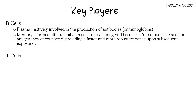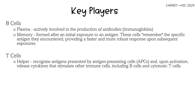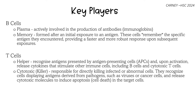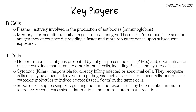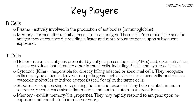There are four key T cell players. Helper T cells initially recognise antigen-presenting cells on the surface and trigger both B cells and T cells. Cytotoxic killer cells are responsible for directly killing infected or abnormal cells; they release cytokines to induce cell death in the target cells. Suppressor cells are involved in suppressing and switching off the immune response when the body has finished fighting the infection. And memory T cells, similar to memory B cells, have memory-like properties that aid in fighting infection if re-exposed.